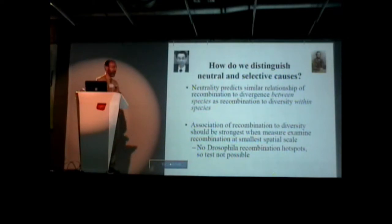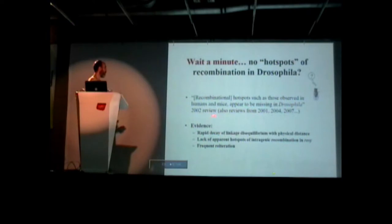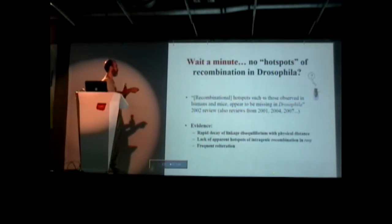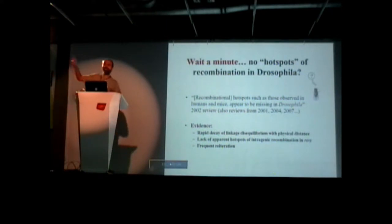This has been said a lot. Unfortunately, nobody told the flies. If you ask the flies, well, there are no hotspots for recombination in Drosophila. This is a quote from a review in 2002: 'Recombination hotspots such as those in humans and mice are missing in Drosophila.' There are also reviews from 2001, 2004, and 2007 — they all say this. But there's no primary data that would support that anywhere; the reviews just say it over and over again.